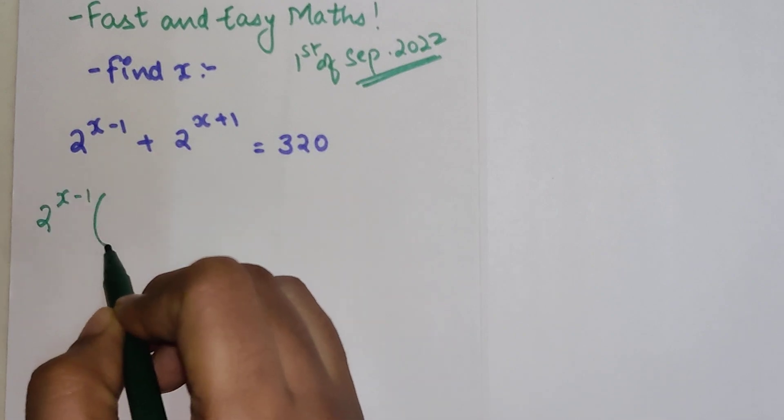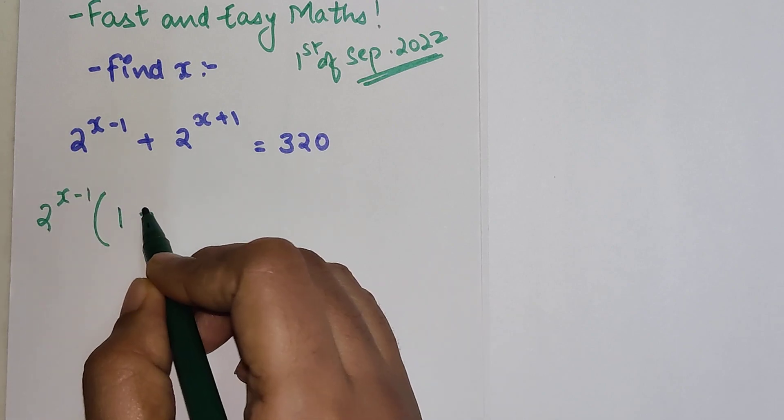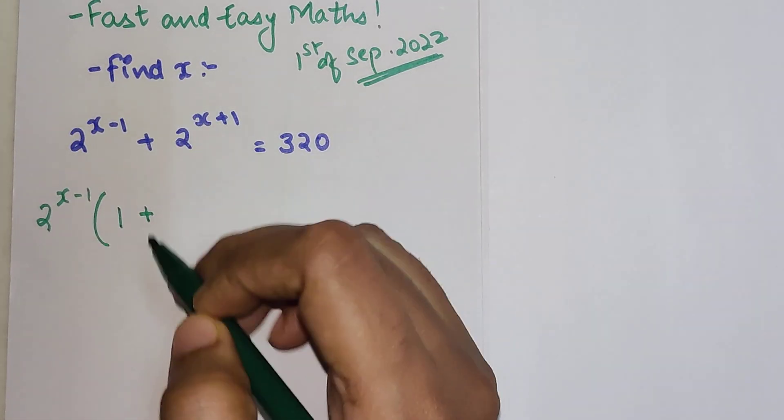If I have taken that outside, so here instead of this I will get a 1 plus, now here what will this be?